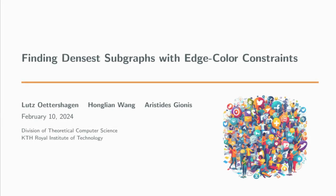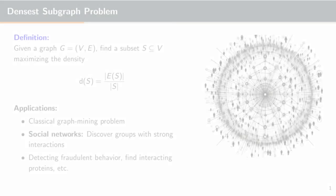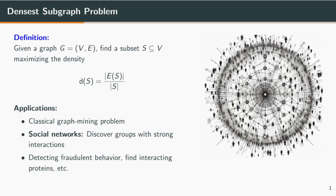Finding densest subgraphs is a classical graph theoretic problem and one of the most fundamental issues in graph data mining and social network analysis. In our paper, 'Finding Densest Subgraphs with Edge Color Constraints,' we consider a variant of the densest subgraph problem in networks with single or multiple edge attributes. The densest subgraph problem helps us find the most connected areas within a network, revealing critical patterns and structures. From tracking viral trends on social media to understanding complex biological systems, solving this problem sheds light on the core elements that drive connectivity and influence.